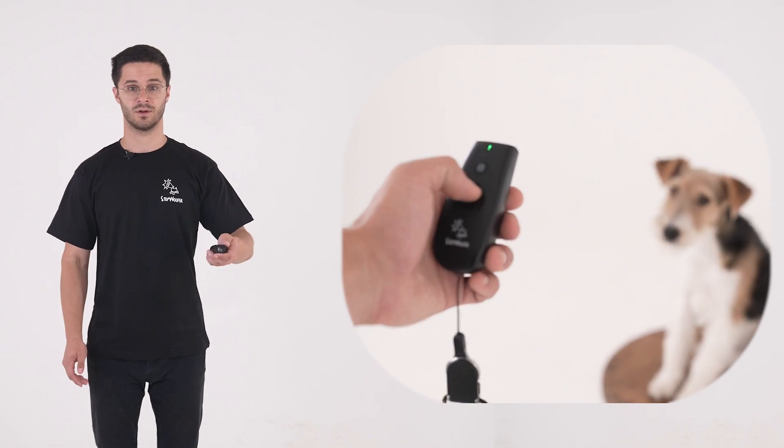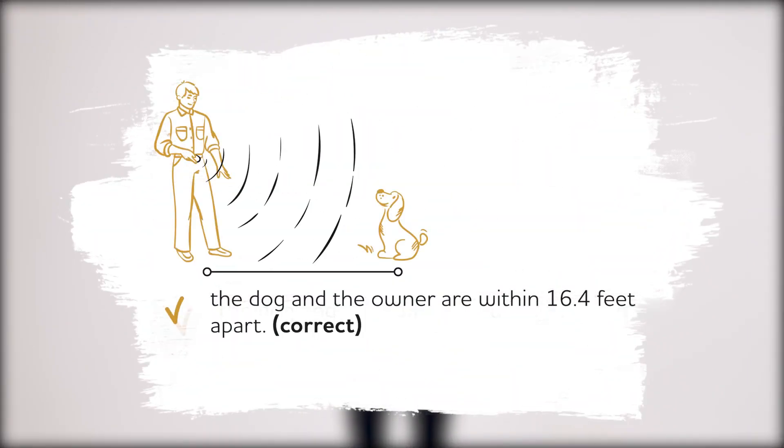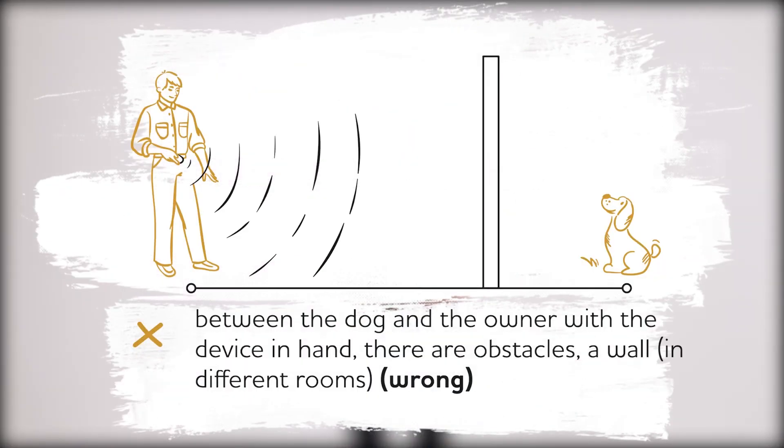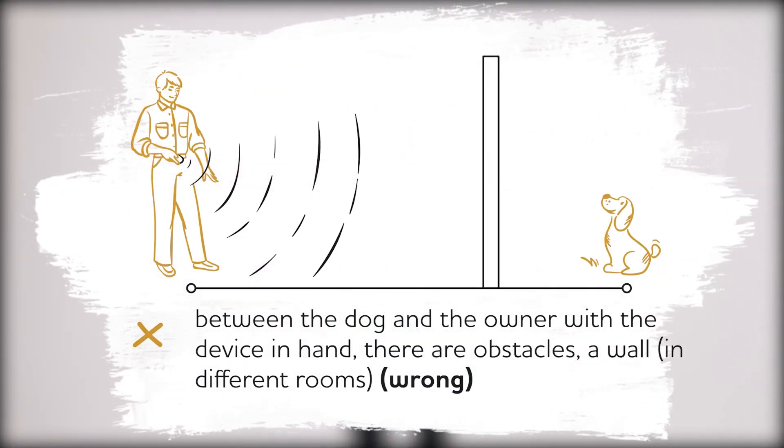Tip 2: The dog should be up to 16.4 feet away from you. If the dog is further away, it will not hear the beep or ultrasound and it will have no effect. Also, there should be no walls, fences, or other obstacles between the device and the dog. The device should be pointed directly at the pet.